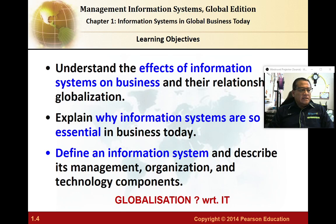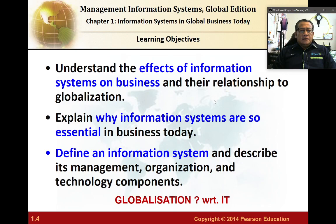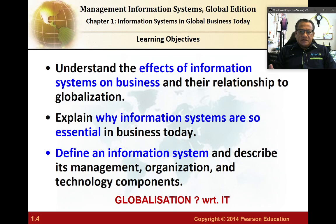Our learning objectives: this course requires you to understand the effect of information systems on business and their relationship and impact on globalization. You need to be able to explain why information systems are so important and essential in business today, and to define what an information system is — its definition, description, role, and function with respect to management, organization, and its technological components.